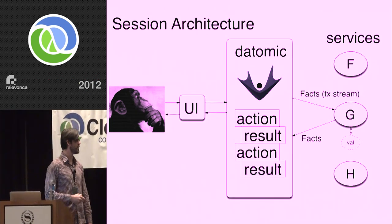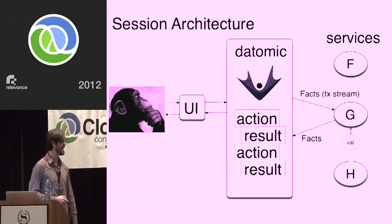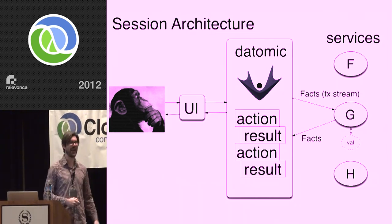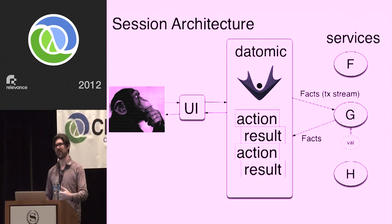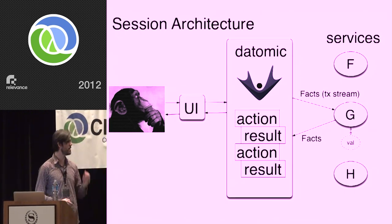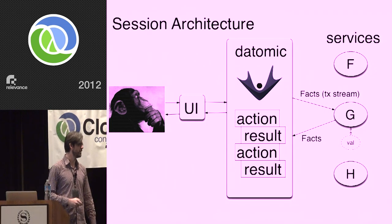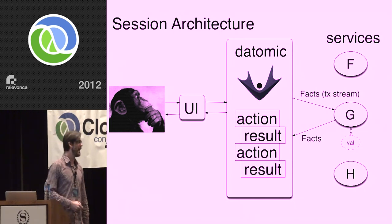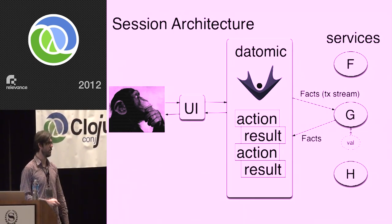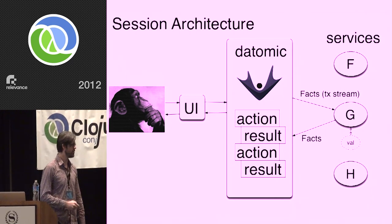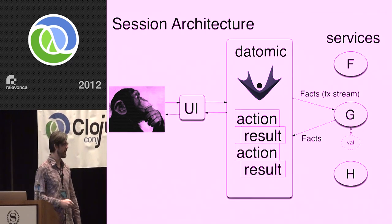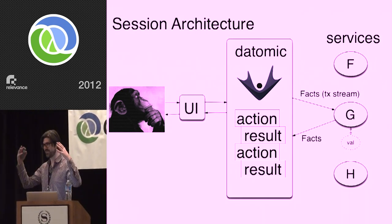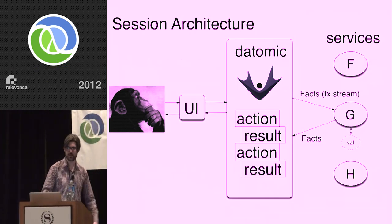You submit your action, the system makes a transaction into Datomic. These services are listening to the Datomic transaction stream and notice that the request embedded in the action is talking about them. They notice the new action, do whatever they need to do, and report back to Datomic. That result gets sent over a web socket back into the UI. You're seeing the result appear there — you perceive the result, perceive the history, and take the next action.